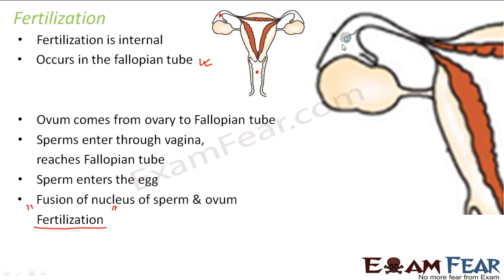There are so many sperms released, but only one sperm is enough to fertilize the egg. This egg will remain alive for only 24 hours, so fertilization must take place within that window for reproduction to occur. It is a matter of chance whether the ovum meets the sperm in those 24 hours. If it does, the sperm enters the ovum, the nucleus of the sperm fuses with the nucleus of the ovum, and fertilization takes place.